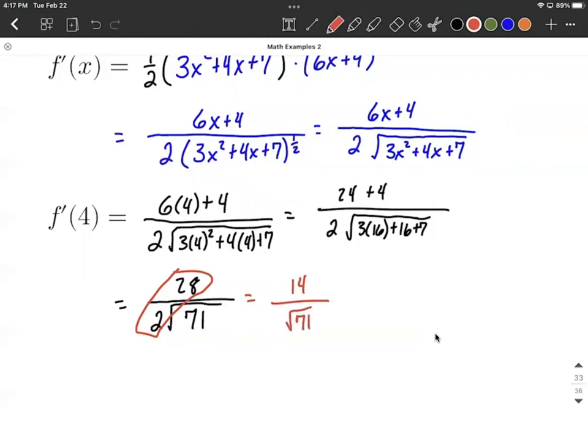And that's a pretty nice answer, but we may want to rationalize our denominator. To do so, we would multiply numerator and denominator both by the square root of 71 in this case. And you get 14 times the square root of 71 in our numerator.